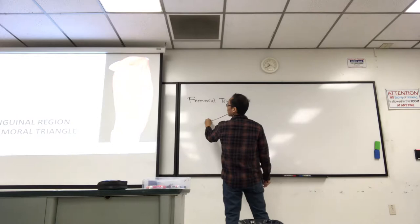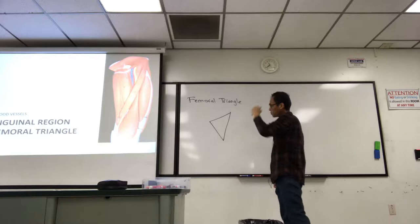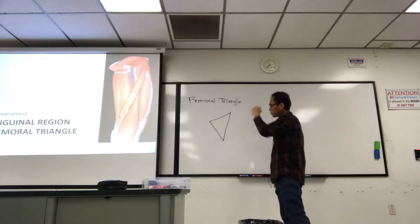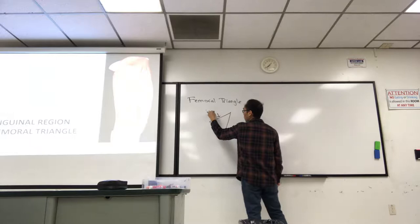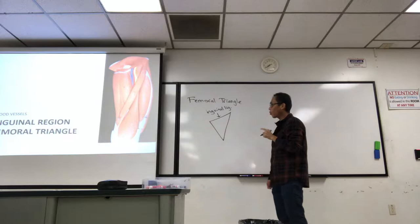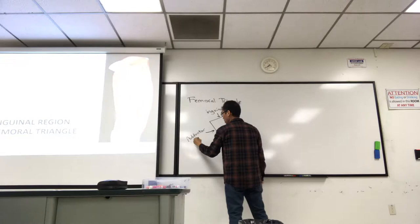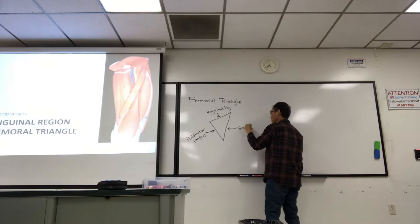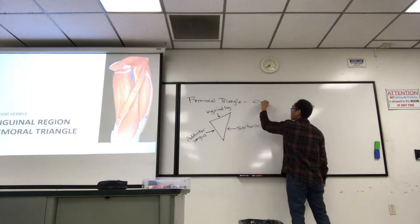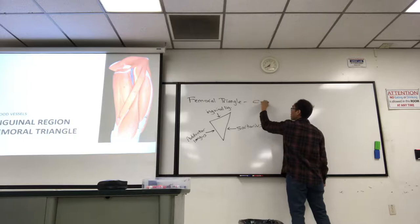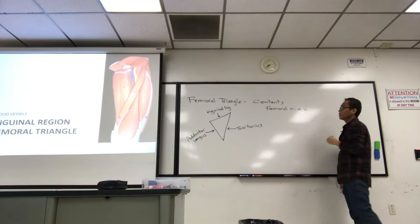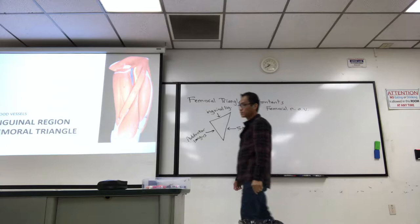In the femoral triangle, what I'm drawing here is that one side of the triangle is the inguinal ligament. The other two are borders of muscles. The medial border is the adductor longus. The lateral border is formed by sartorius. Those are the borders. But the contents, which I would have you identify, are the femoral nerve, artery, and vein from lateral to medial.